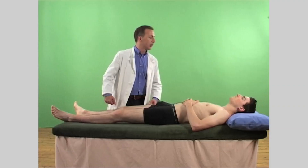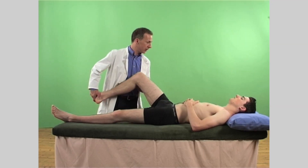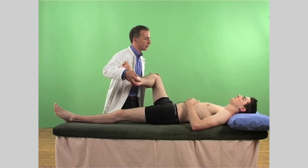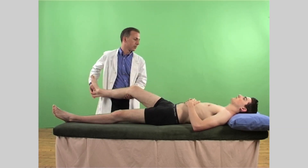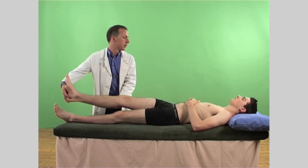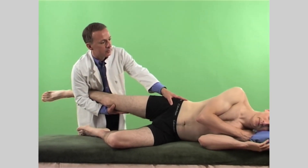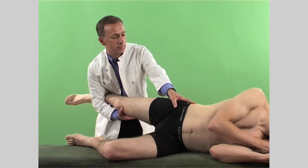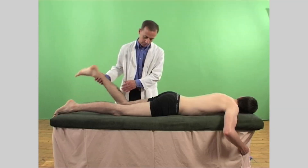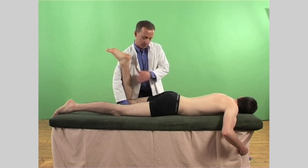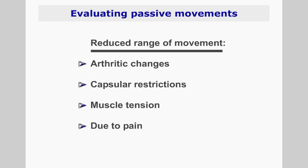Next, examine the passive movements of the hip in the supine position. Bring the patient's hip and knee to 90 degrees flexion, then guide the hip joint through flexion, external rotation, internal rotation, abduction, adduction and circumduction. To properly evaluate extension, place the patient in the side lying or prone position, support the patient's thigh, and take the leg behind the patient to assess the range of extension. Note the range of movements achieved and the presence of pain. If range of movement is reduced in a particular plane, ascertain whether this is due to arthritic changes, capsular restrictions, muscle tension or pain.